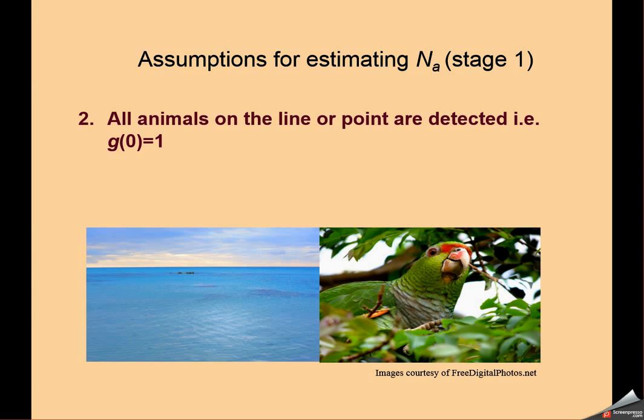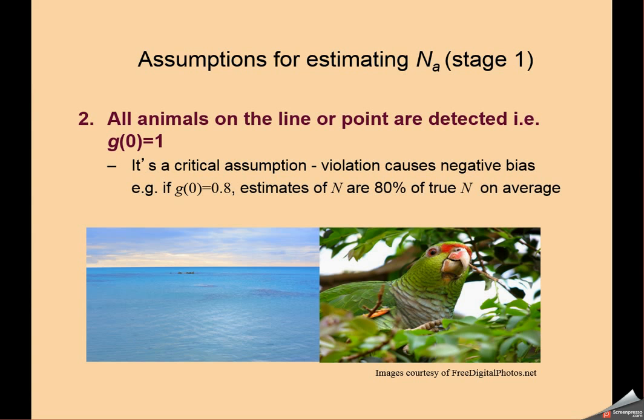We also assume that animals right on our transect are estimated with certainty, and it's a direct consequence. The degree to which that assumption is violated leads to exactly the same degree of downward bias or underestimation of population size.